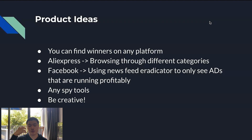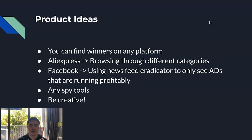After compiling the list, I sit down and move to the next step: product validation. If you're using Facebook for product research, you can use a newsfeed eradicator Chrome extension or similar software to see ads that are currently running. Look for ads with high comments, high shares, ads that have been running for a while, primarily from e-commerce and dropshipping stores. If those stores are doing well with a product, why can't you do it successfully too?